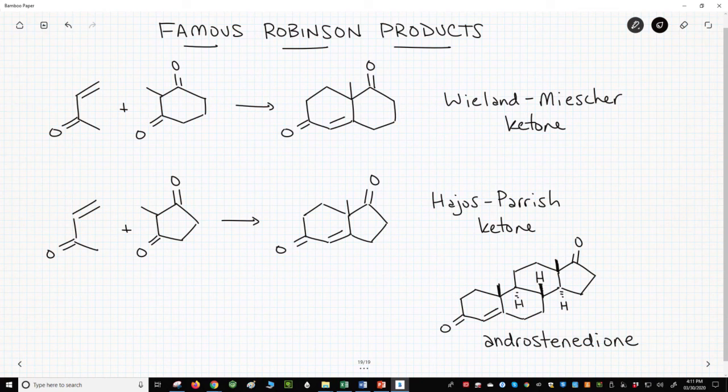Each starts with a Michael acceptor, the alpha-beta unsaturated ketone, and then Michael donor, the enolate of a 1,3-dione. Each finishes with a cyclic alpha-beta unsaturated ketone from the intramolecular aldol condensation.